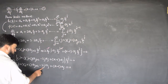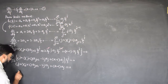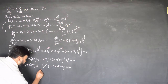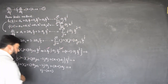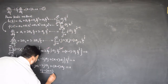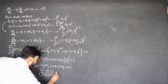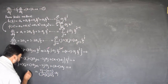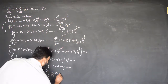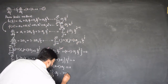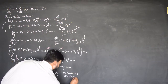Moving the a_j term to the other side, we have (2j minus k minus 1) a_j, and dividing by (j+1)(j+2), we get a_{j+2} equals (2j minus k minus 1) divided by (j+1)(j+2), times a_j. This we call the recursion relation, because it recurs the values.